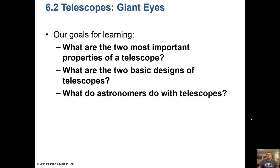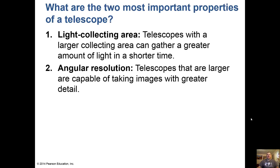So let's look at telescopes. What are the two most important properties of a telescope? If you go to Walmart or Best Buy to buy a telescope, they try to sell you on magnifying power — that doesn't matter. You don't want a telescope that magnifies all that much. What's important is light-gathering area. A larger collecting area can gather a greater amount of light in a shorter time.